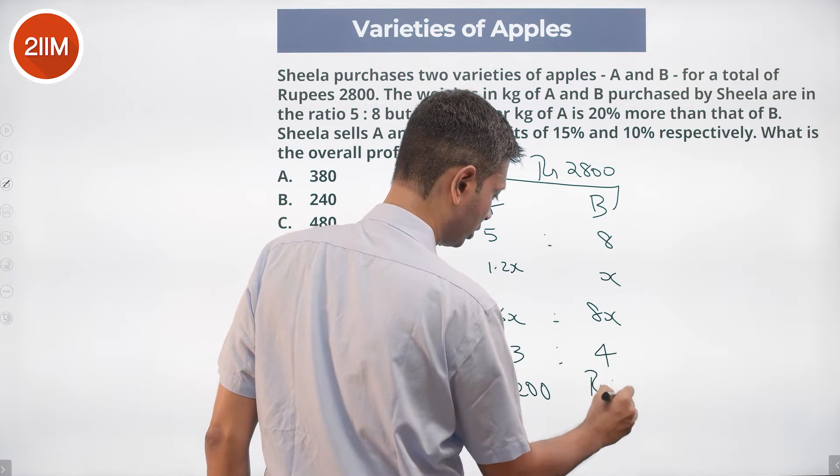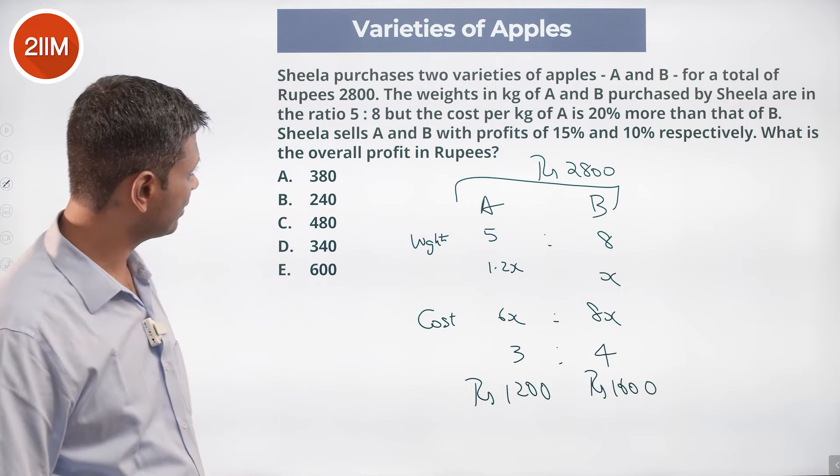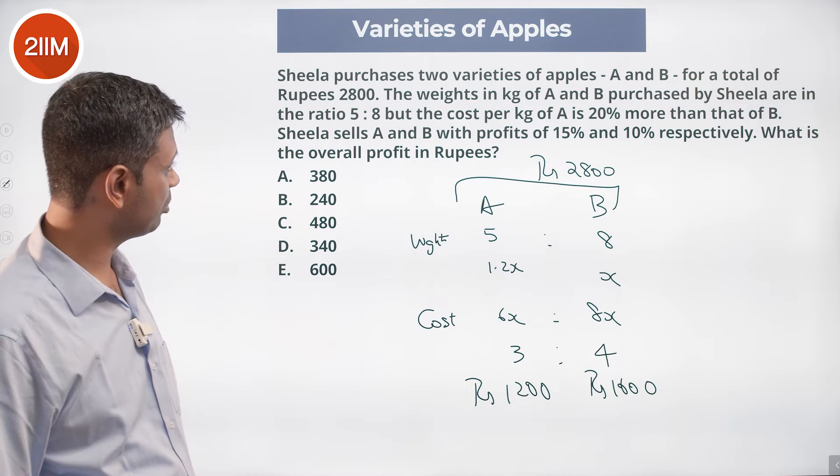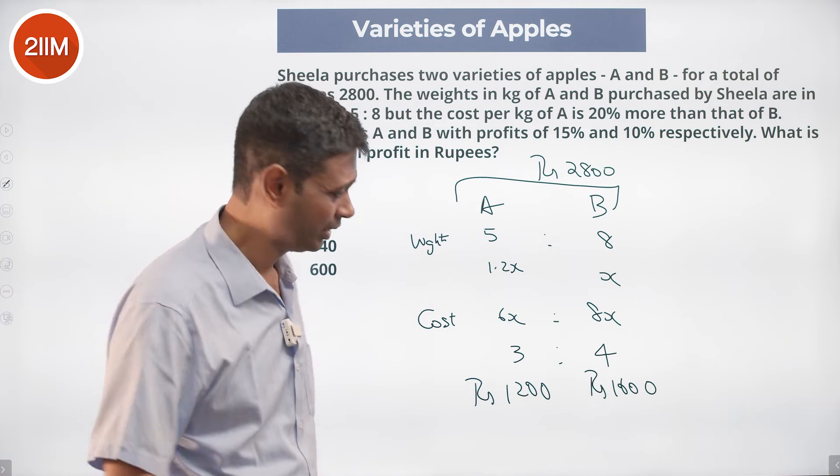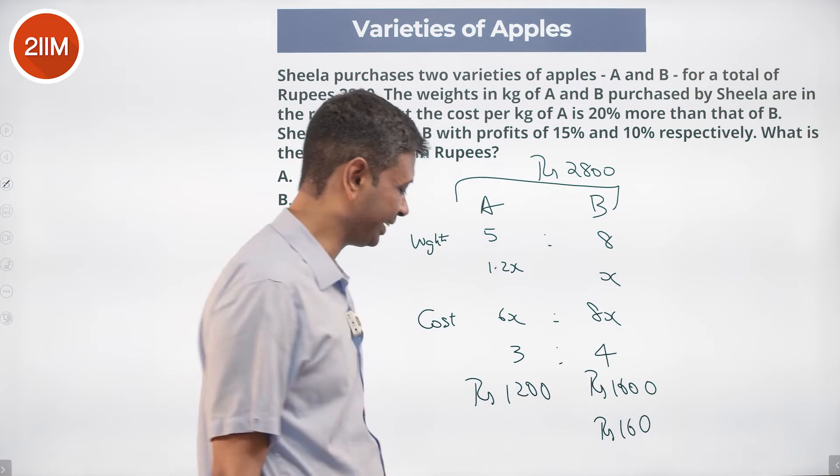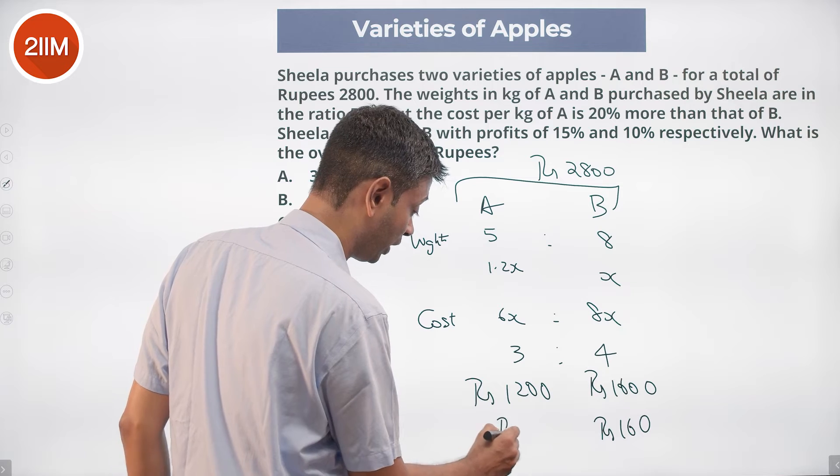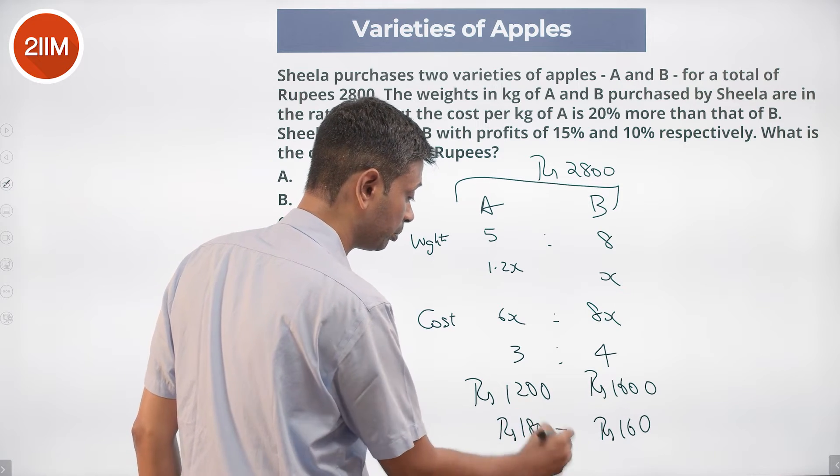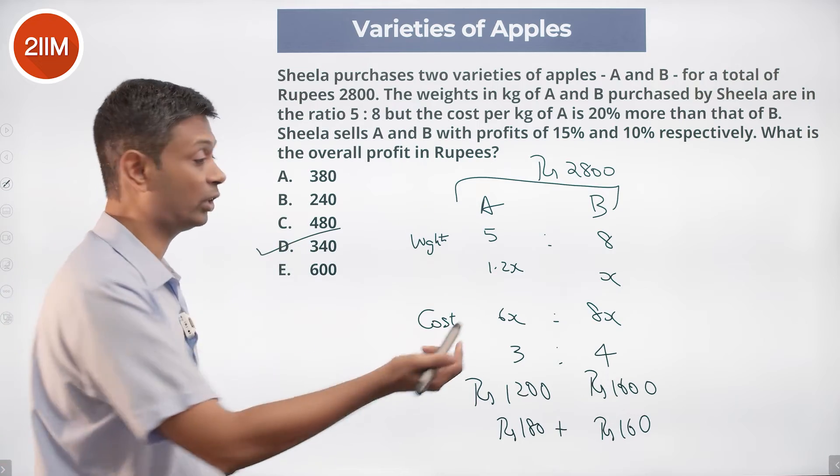Sheila sells A and B with profits of 15% and 10% respectively. What is the overall profit in rupees? 15% of 1200: 5% is 60, so 15% is 180. 10% of 1600 is 160. 180 plus 160 equals rupees 340. Yes, it's there. Hopefully that's the right answer.